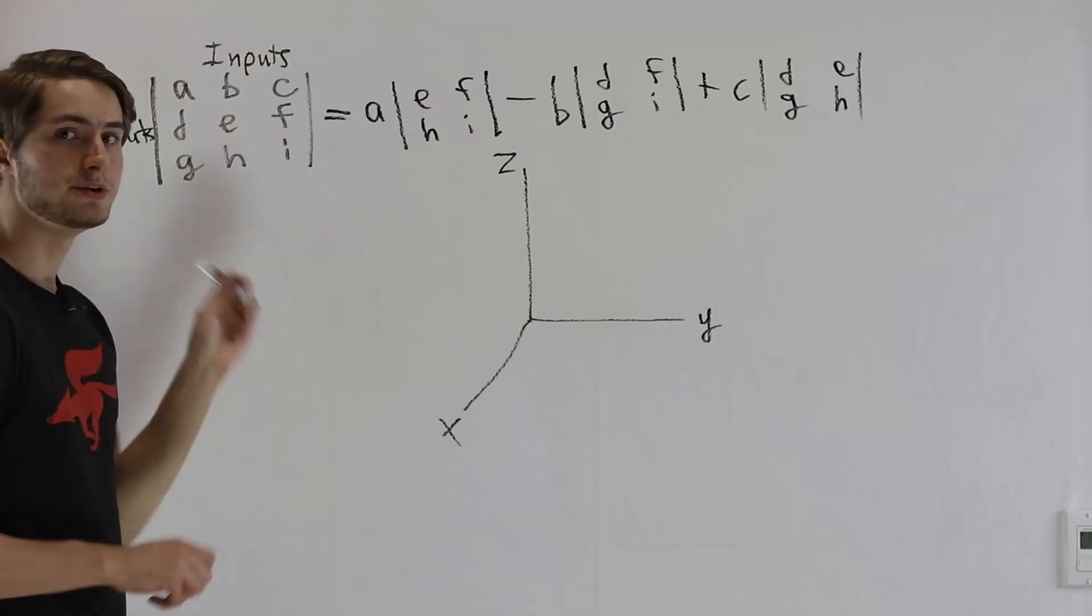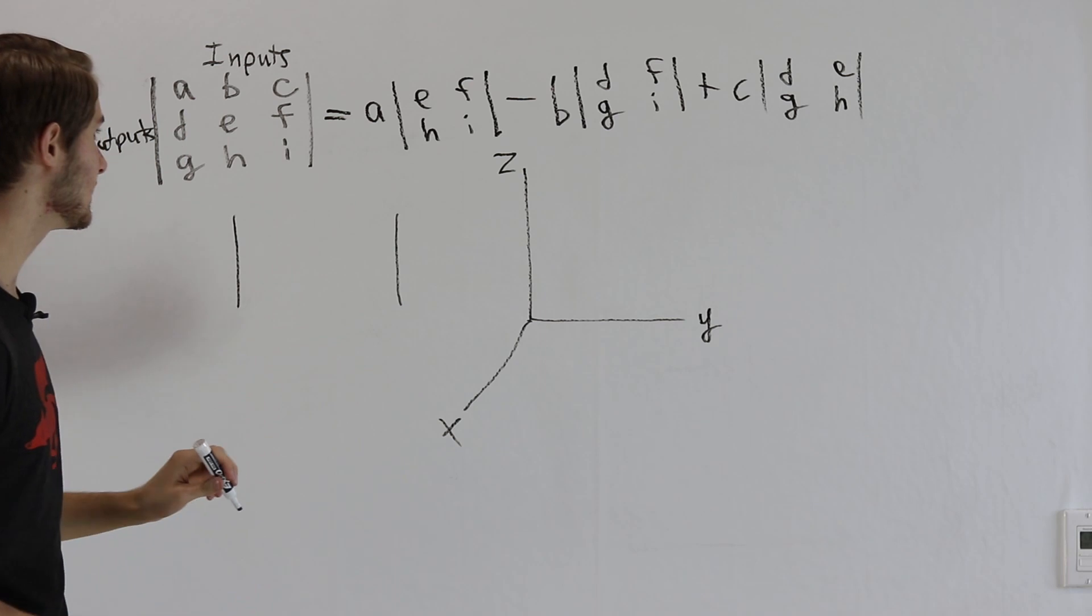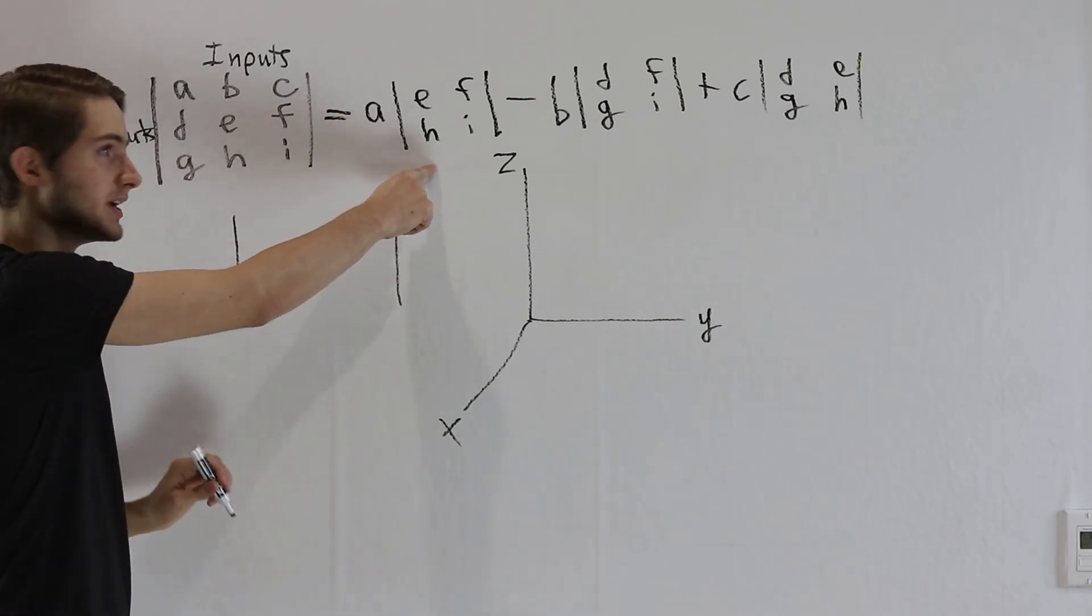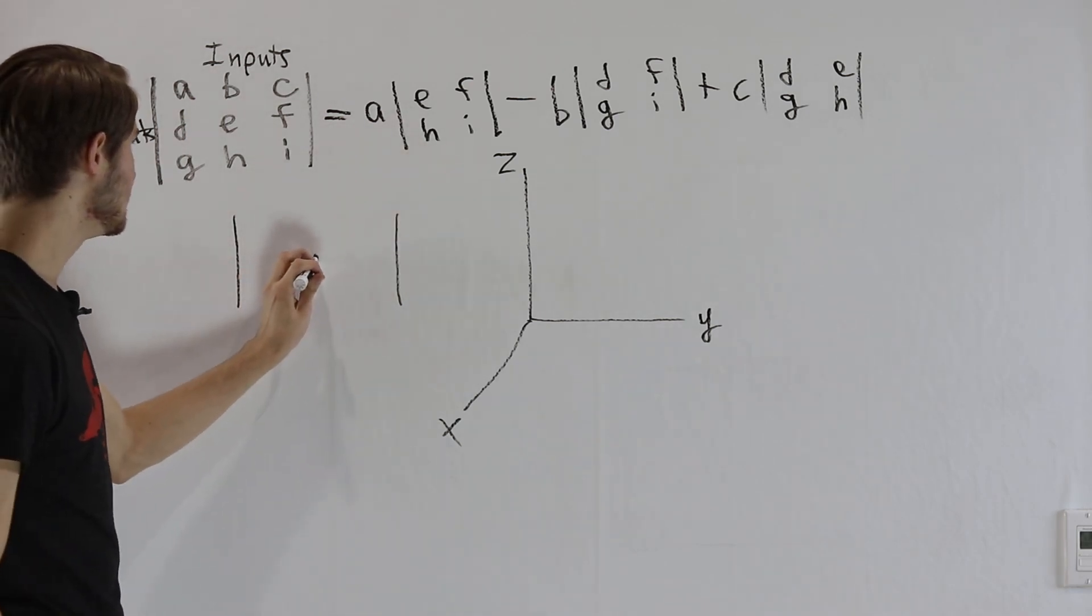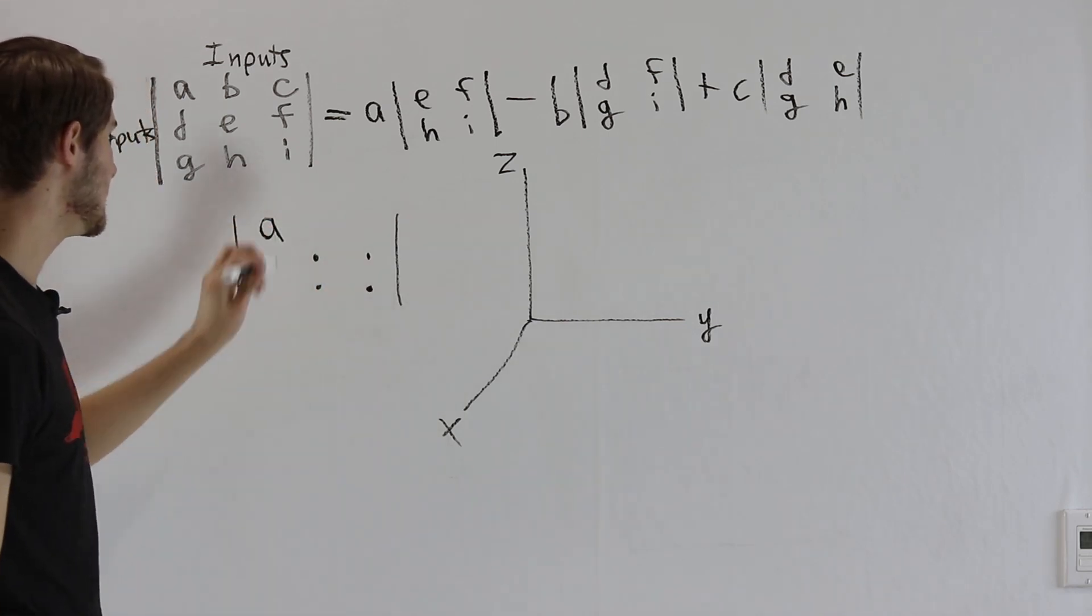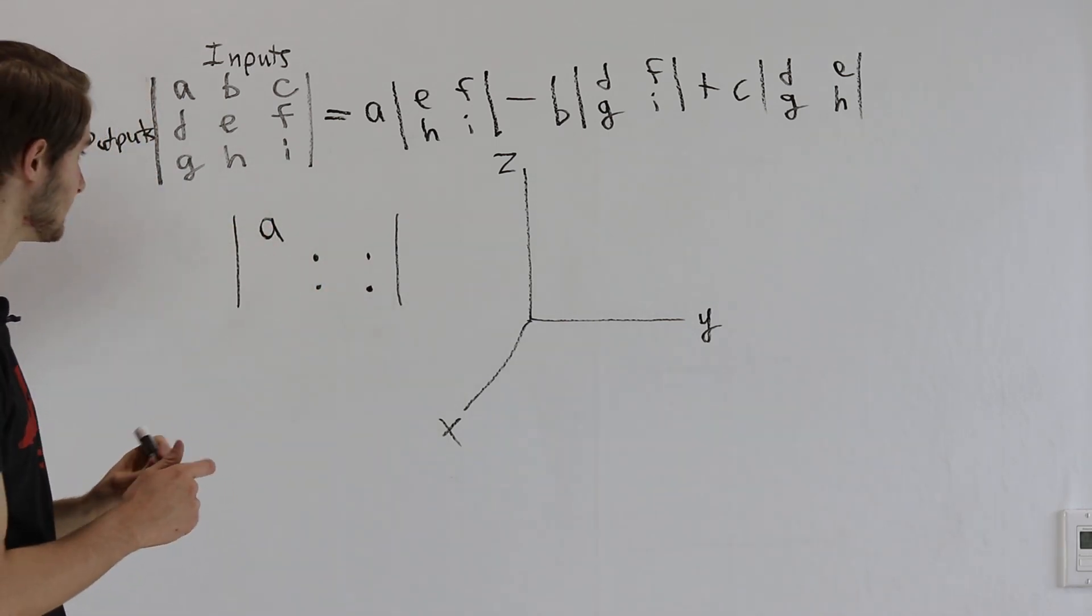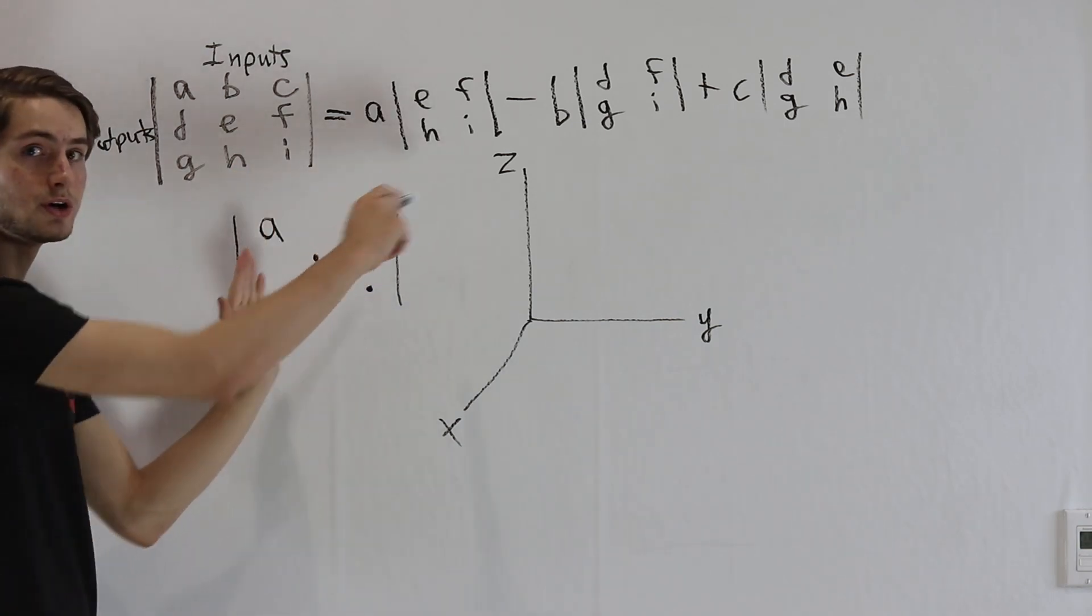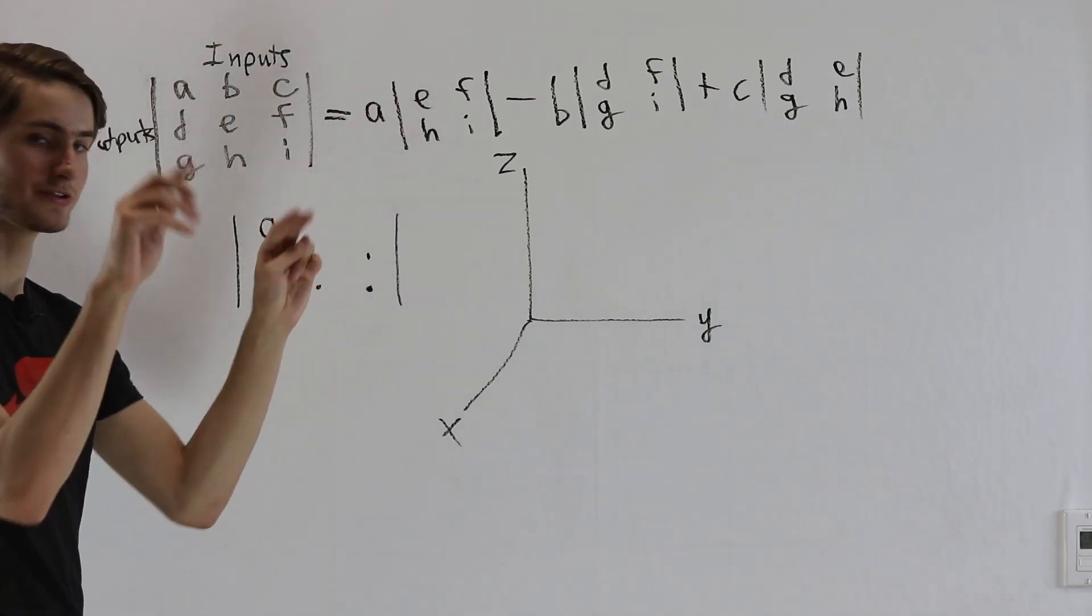So if we think about our 3 by 3 matrix, but just looking at the components that we're using in this term, we have E, F, H, and I right here, and then we have our A over here in the top left. So notice everything in the same row and column as the A has sort of been cancelled out.